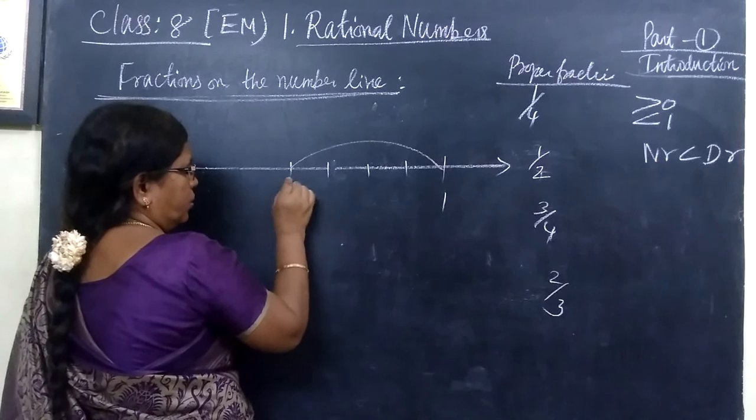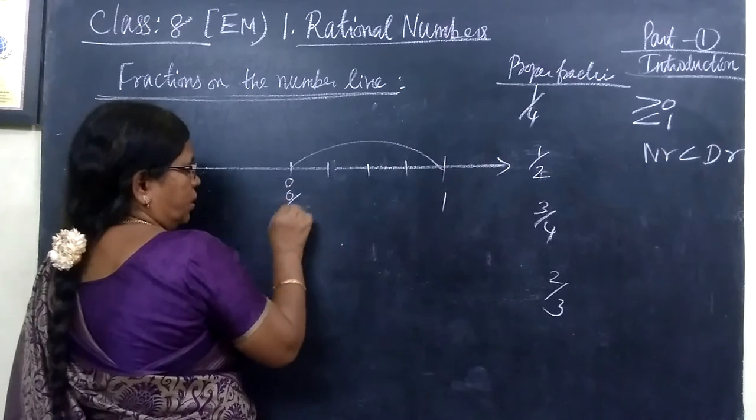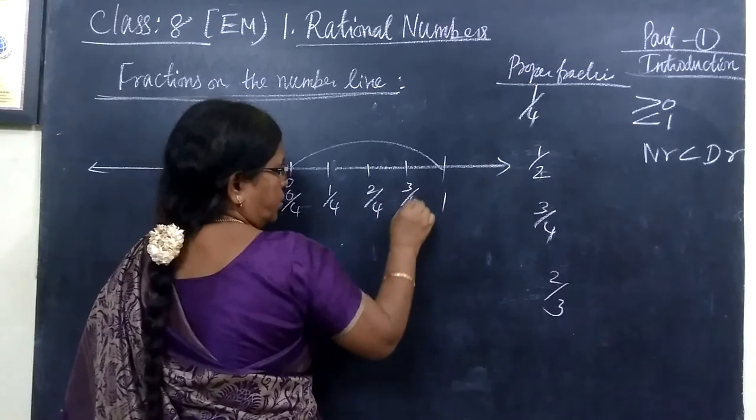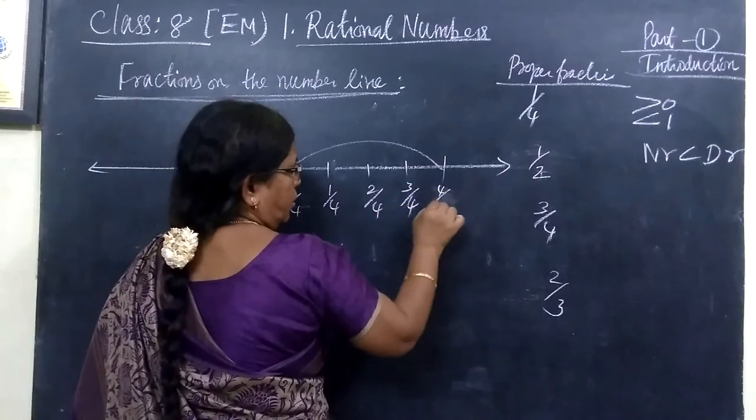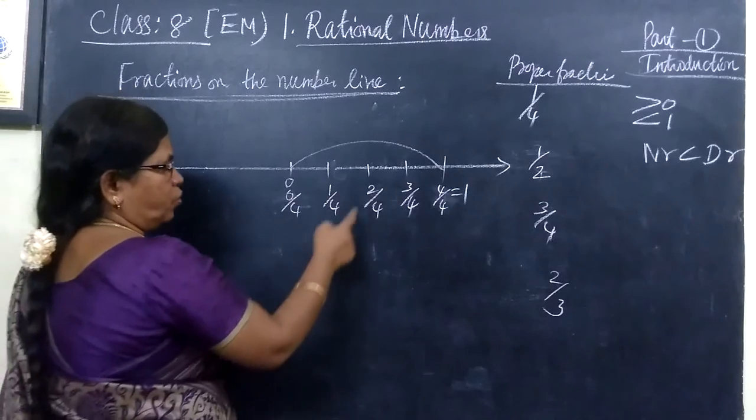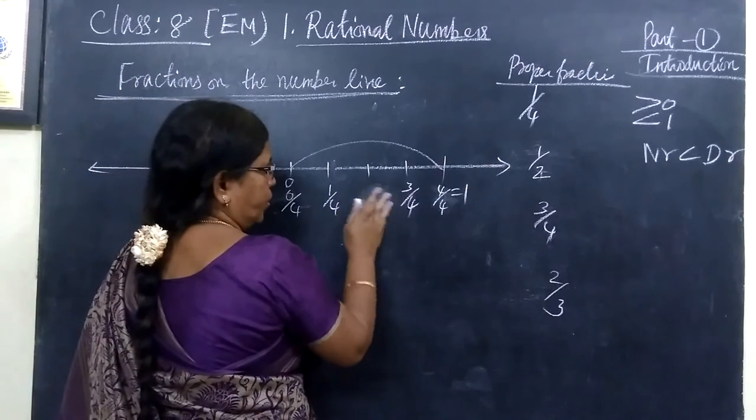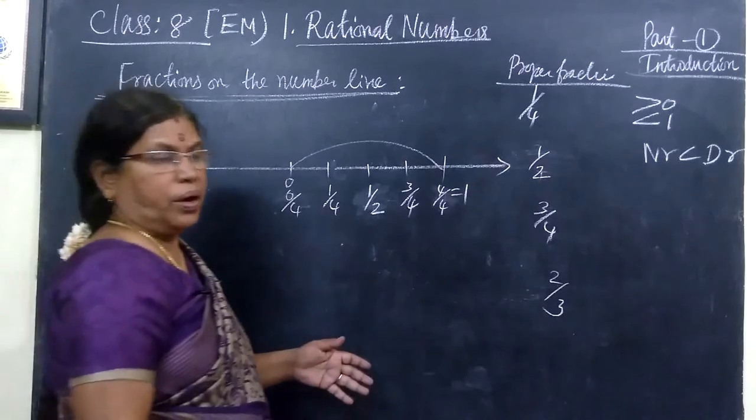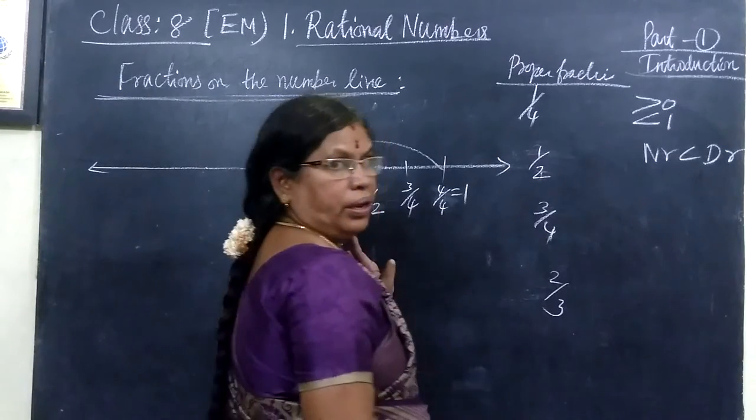So actually this 0 can be written as 0 by 4. This is 1 by 4. And this is 2 by 4. And this is 3 by 4. Actually this is 4 by 4. And this is nothing but 1. And even 2 by 4 can be simplified as 1 by 2. So now we have marked these fractions on the number line.